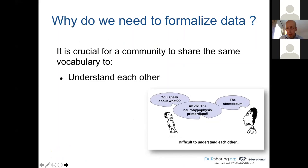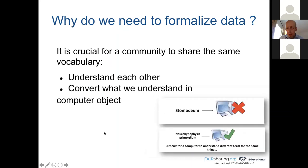Here you have an example of two people talking together. One says, 'What are you talking about?' And the second answers, 'The stomodeum.' The first replies, 'Ah, the neuro-hypophysis primordium.' So here we have two expressions with the same meaning, but which one is the good one and which one will be understood and validated by the community? To formalize data is also important to convert what we understand into computer objects. If we take the previous example, only 'neuro-hypophysis primordium' will be understood by the machine, except if somewhere we can specify that both are synonyms.